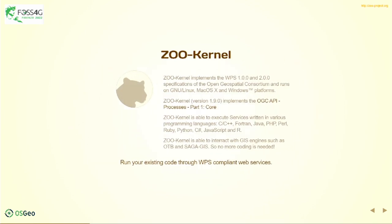The ZOO kernel supports WPS 1 and WPS 2 specifications made available by the Open Geospatial Consortium. It runs on every platform. The latest ZOO kernel version 1.9.0 is currently supporting the OGC API Processes Part 1 Core. The ZOO project was also involved in Testbed 16 for working on the test suite. The ZOO kernel is also able to support any programming language. We are currently supporting C, C++, Fortran, Java, PHP, Perl, Ruby, Python, C#, JavaScript, and R. This means that if you know how to program in only one of these languages, you can implement your full service using that specific language.